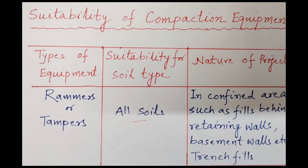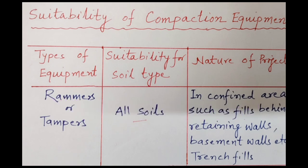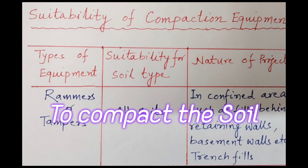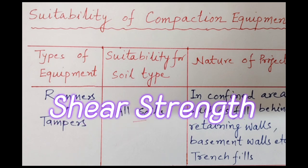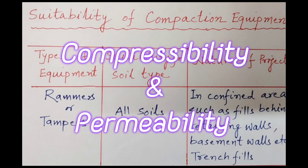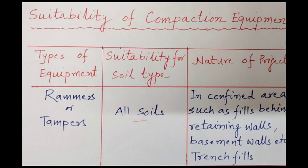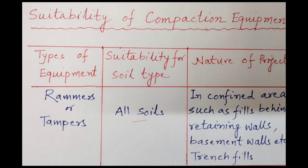First of all, why do we use rollers? We use rollers to compact the soil. Compaction generally leads to an increase in shear strength and helps improve the stability and the bearing capacity of the soil. It also reduces the compressibility and permeability of the soil. Remember, compaction is the most common and important method of soil improvement. The densification of soil by the application of mechanical energy is known as compaction.